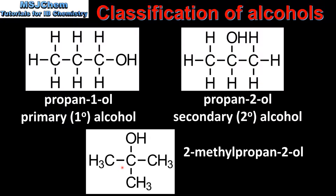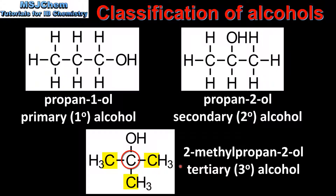Our last example is 2-methyl-propan-2-ol. As we can see there are three carbon atoms that are directly bonded to the carbon atom that is bonded to the hydroxyl group. Therefore 2-methyl-propan-2-ol is a tertiary alcohol.